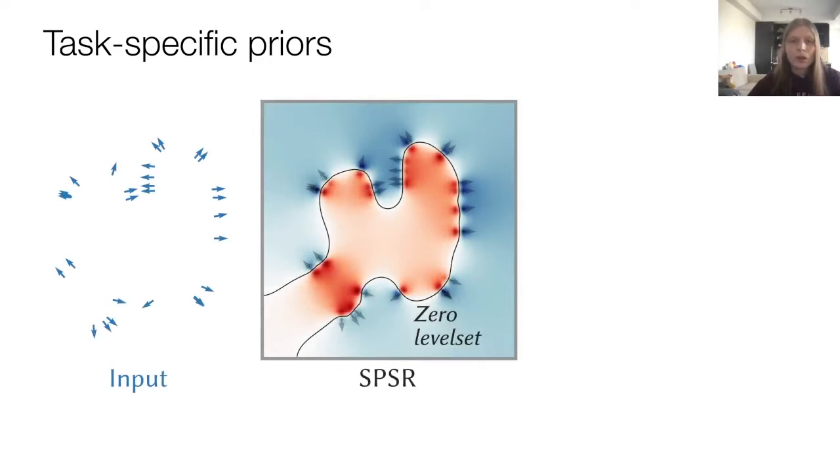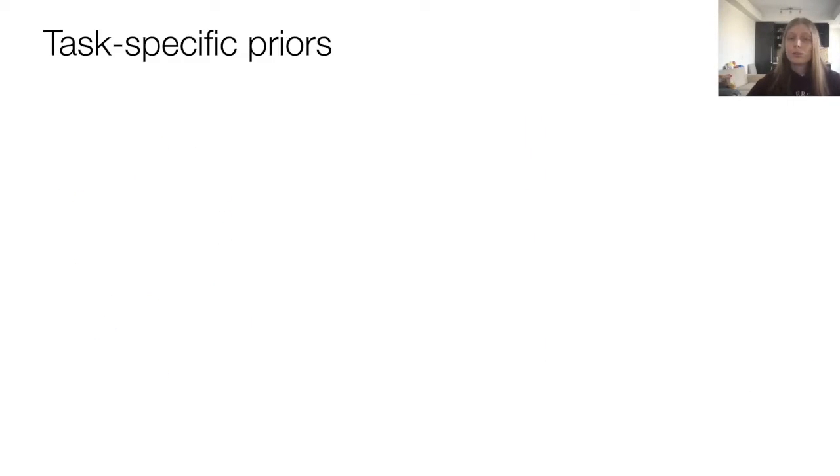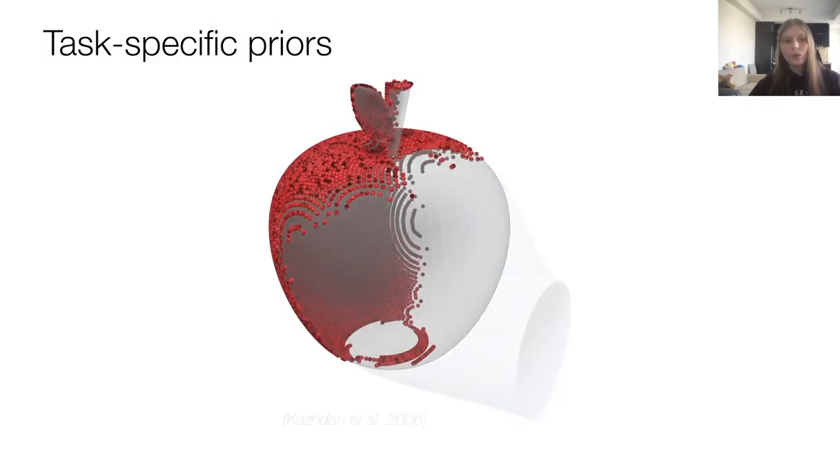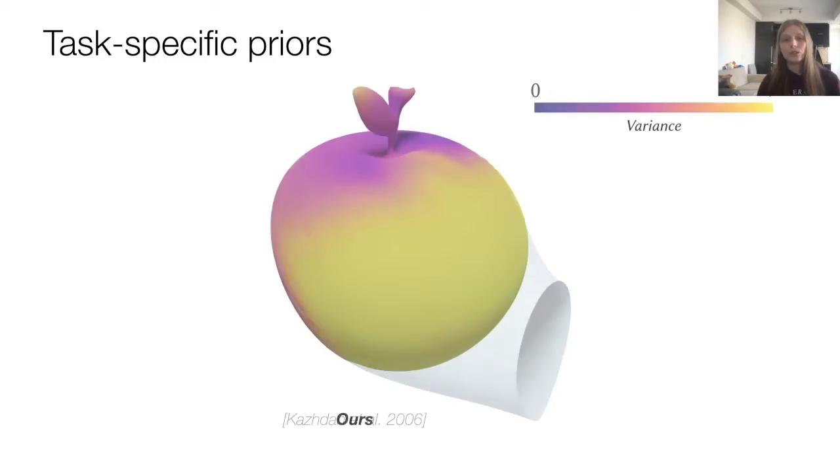For example, a known problem with Poisson reconstruction is that it may produce open surfaces. In our paper, we show that changing the prior to that of a sphere, for example, can enforce closed surfaces in the reconstruction. This works beyond just simple 2D examples, like this apple, of which we simulate a point cloud scan. Poisson reconstruction produces an open reconstruction, but our algorithm returns a closed one.